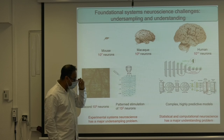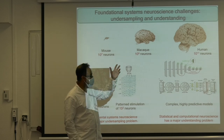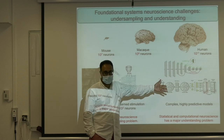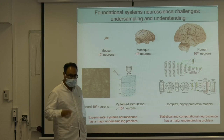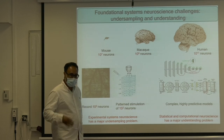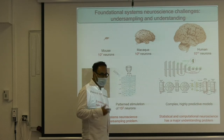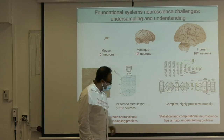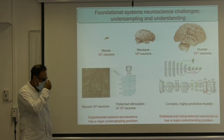This raises another profound theoretical question: are we simply replacing something we don't understand — the brain — with something else we don't understand — these complex models? And you're laughing, but this is the bane of my existence at the moment. So statistical and computational neuroscience has a major understanding problem.